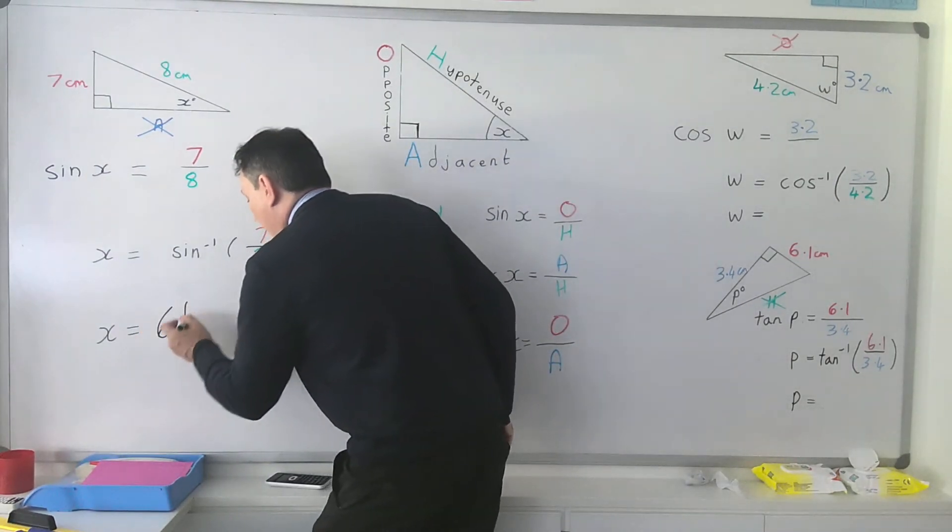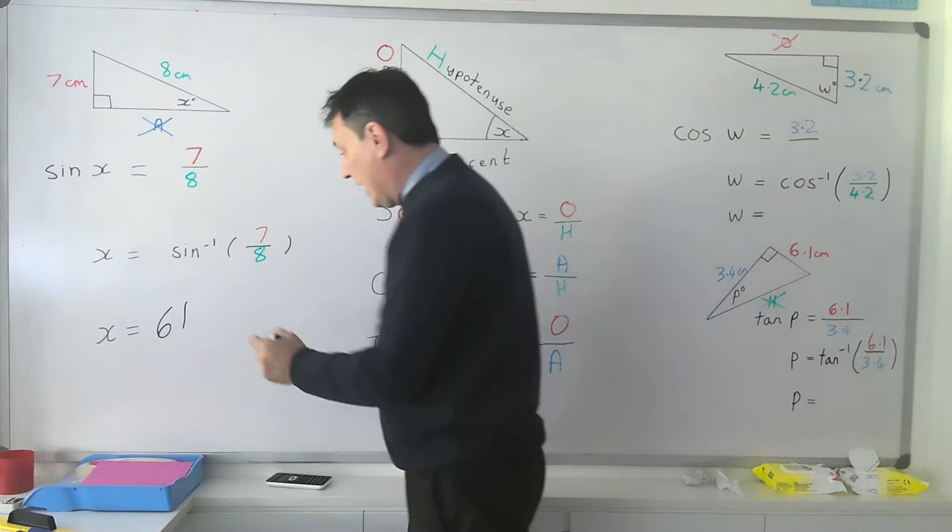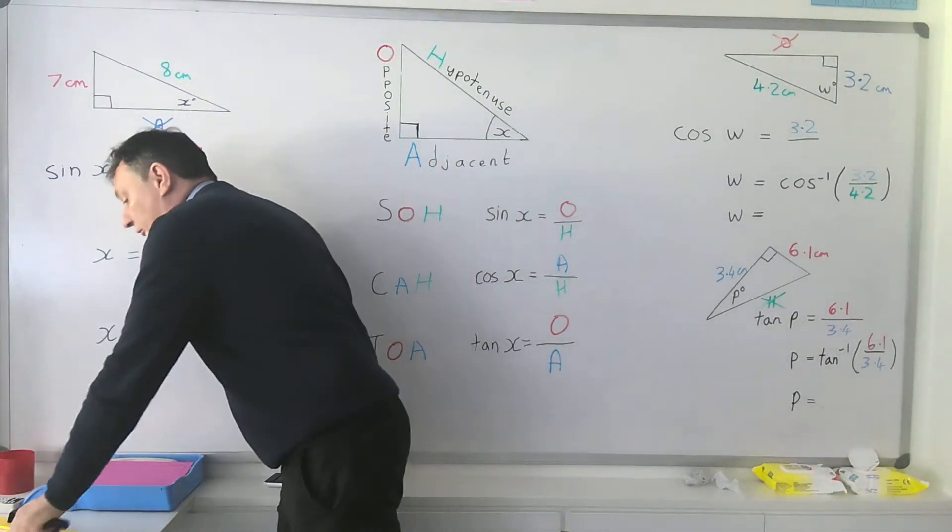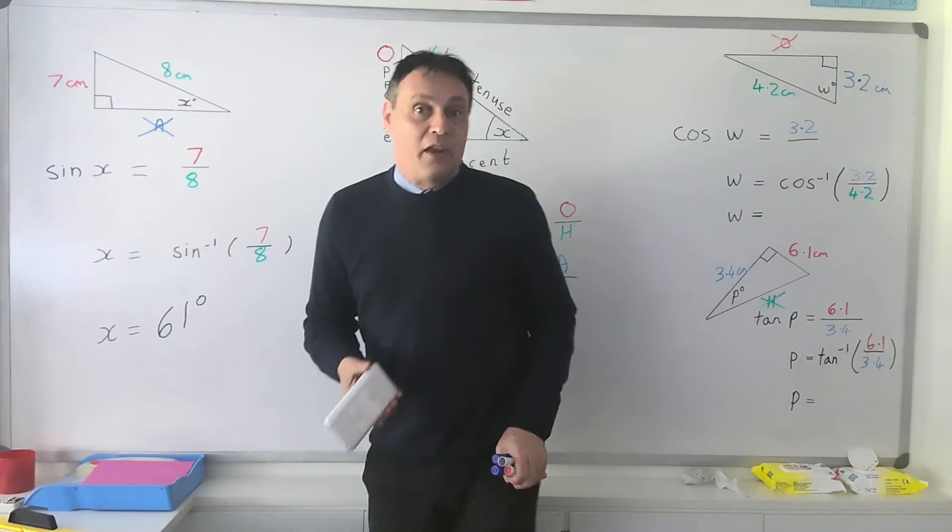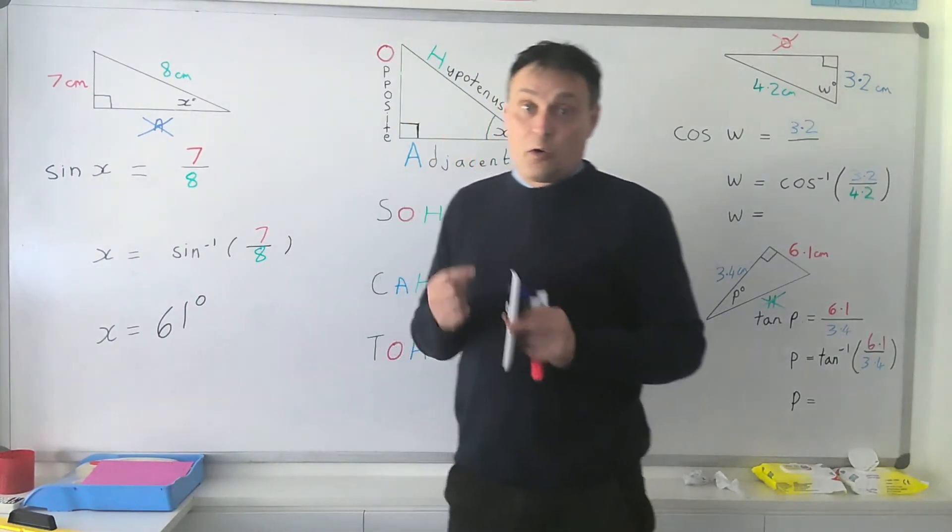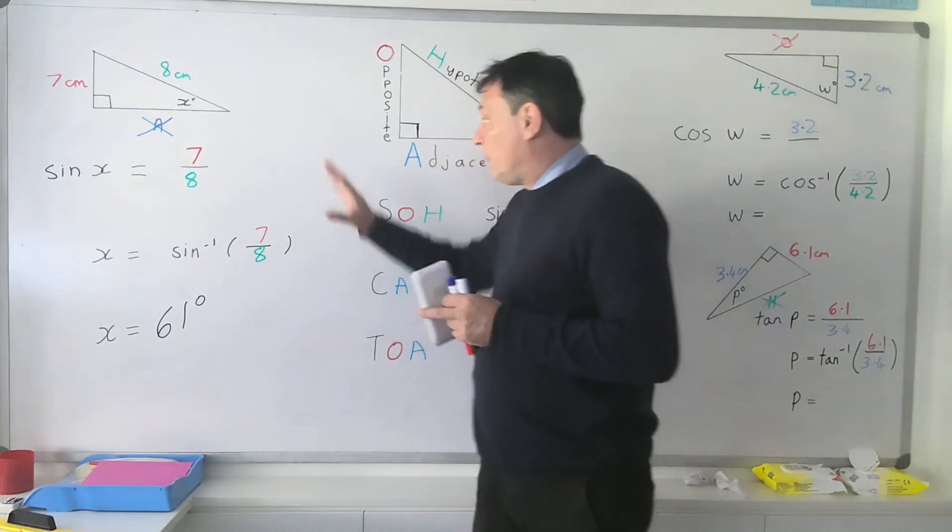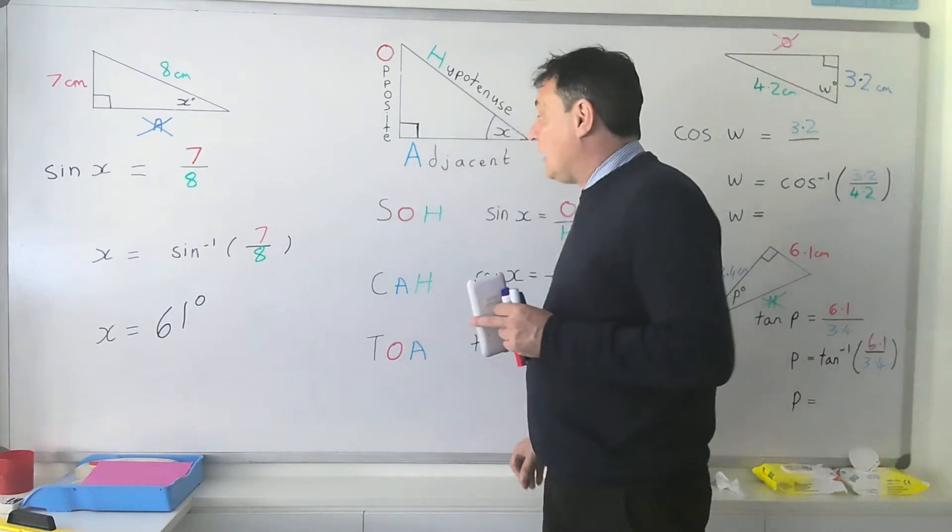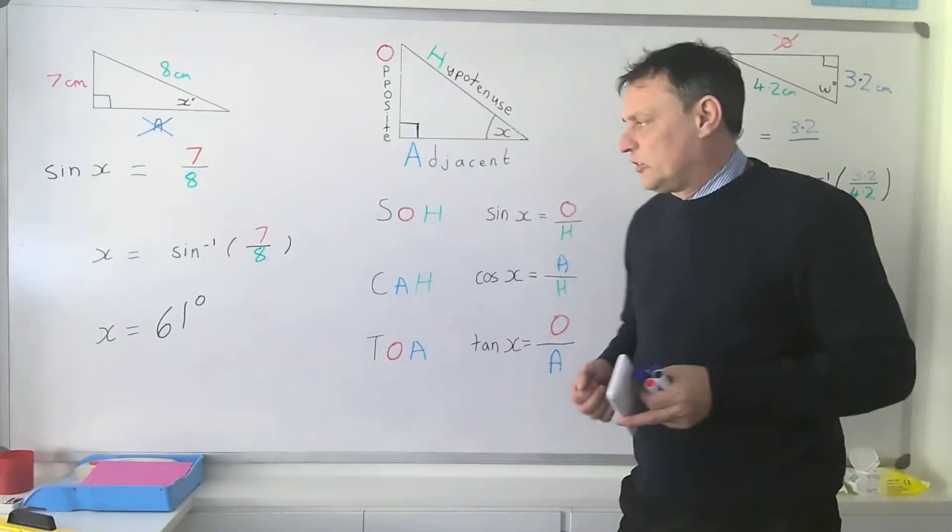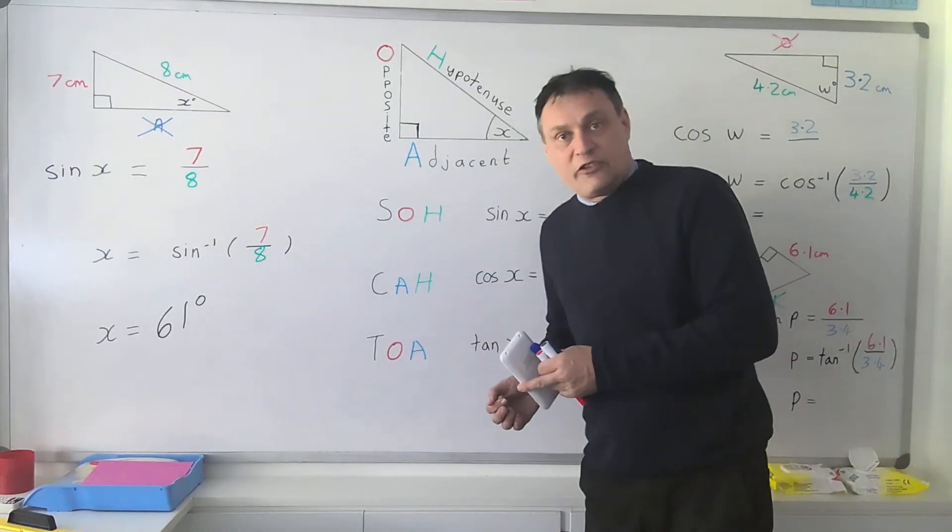That gives you an answer of 61.04 on the calculator. So we call that 61 and our units, of course, as we're finding an angle, is degrees. Now very important as well, you must ensure that your calculator is in degrees mode before you start doing any calculations involving angles, because if it's in a different type of angle measurement, you'll get a wrong answer.